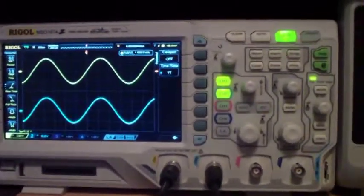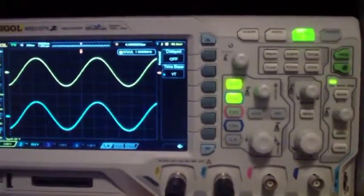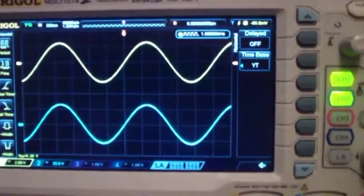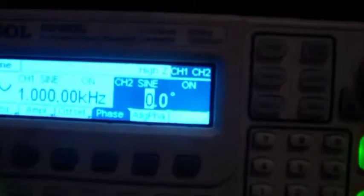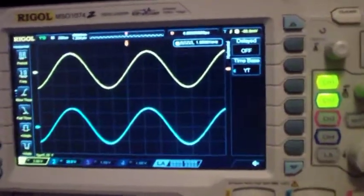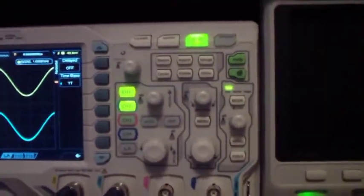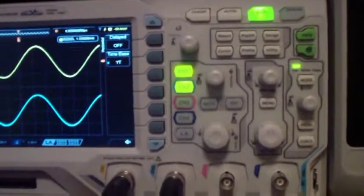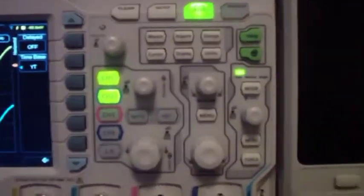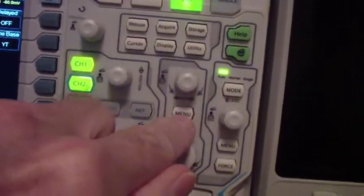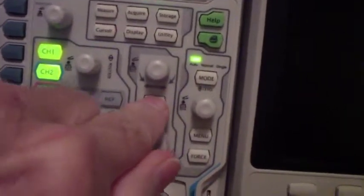Continuing with the acquisition and horizontal on the Rigol, here you see the same in-phase, that is zero degree phase difference, 1 kilohertz signals on channels 1 and 2. On the Siglent, you get to the XY mode through the acquire button. On the Rigol, you get to it through the horizontal menu button.